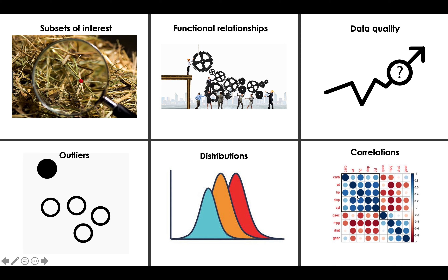Correlation between data values is very important. Sometimes your analysis requires that your data features be independent of each other. So if you have a correlation matrix like this, you can already see what are the values that are correlated. You could probably choose only one of them if there is a high correlation between different features and go only for one representative feature in your project and your analysis.